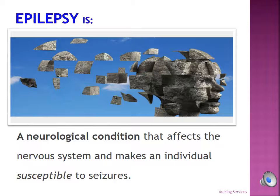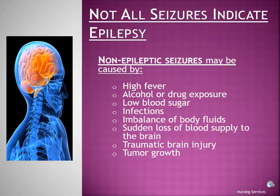Epilepsy is a neurological condition that affects the nervous system and makes an individual susceptible to seizures. While an epileptic condition may make a person more prone to seizures, not all seizures are caused by epilepsy. Seizures have many different causes such as high fever, exposure to drugs or alcohol, low blood sugar levels, infection, imbalances of body fluids, a sudden loss of blood supply to the brain, a traumatic brain injury, or even brain tumors.